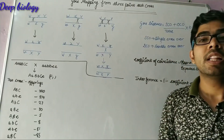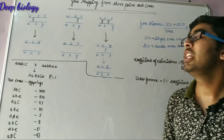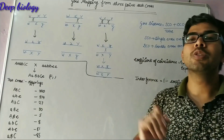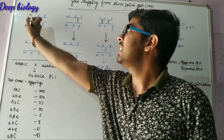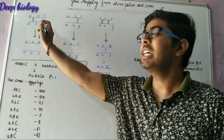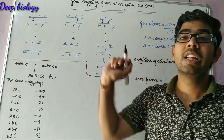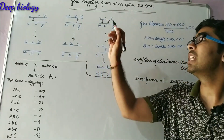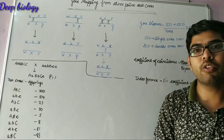In three-point test cross gene mapping, there are three genes involved. Three kinds of crossing over occur: crossing over between the first and second gene, crossing over between the second and third gene, and double crossing over. We have taken three genes W, X, and Y.